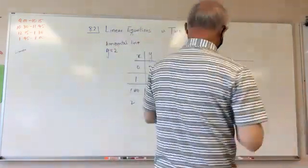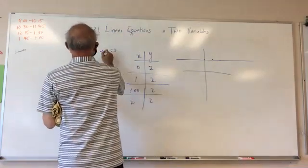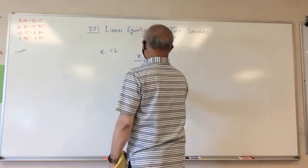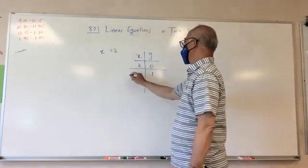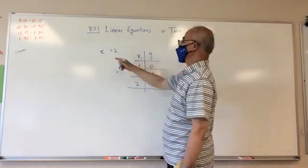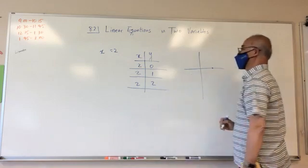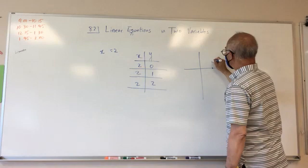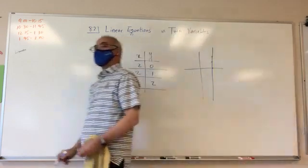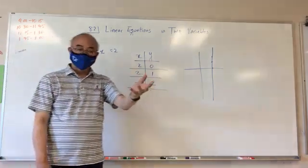Now try x equals two. It's the exact opposite. When y is zero, x is two. When y is one, x is two. No matter what y is, x is always two. Graphing this: at y=0 x=2, at y=1 x=2, at y=2 x=2. You can see this is a vertical line. So when x equals something, it's a vertical line; when y equals something, it's a horizontal line.